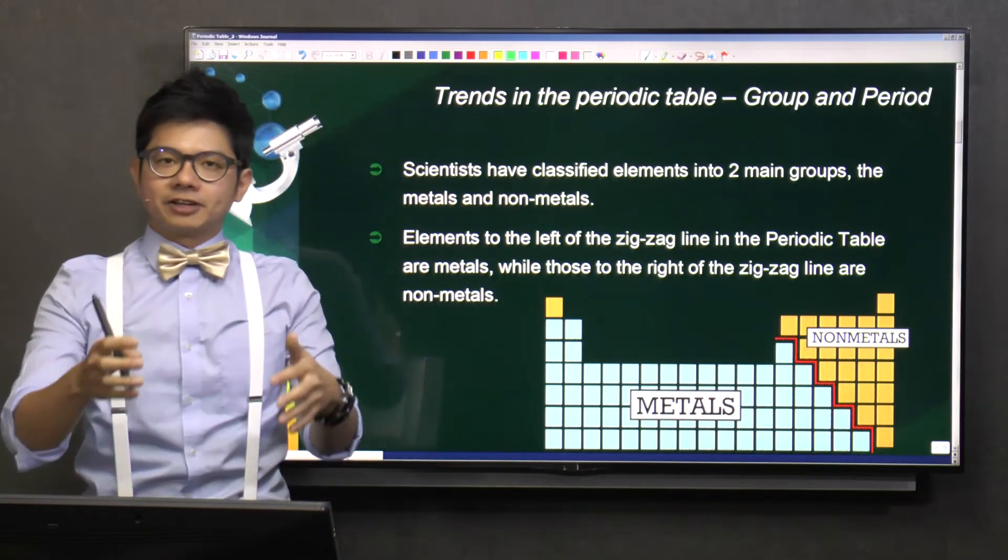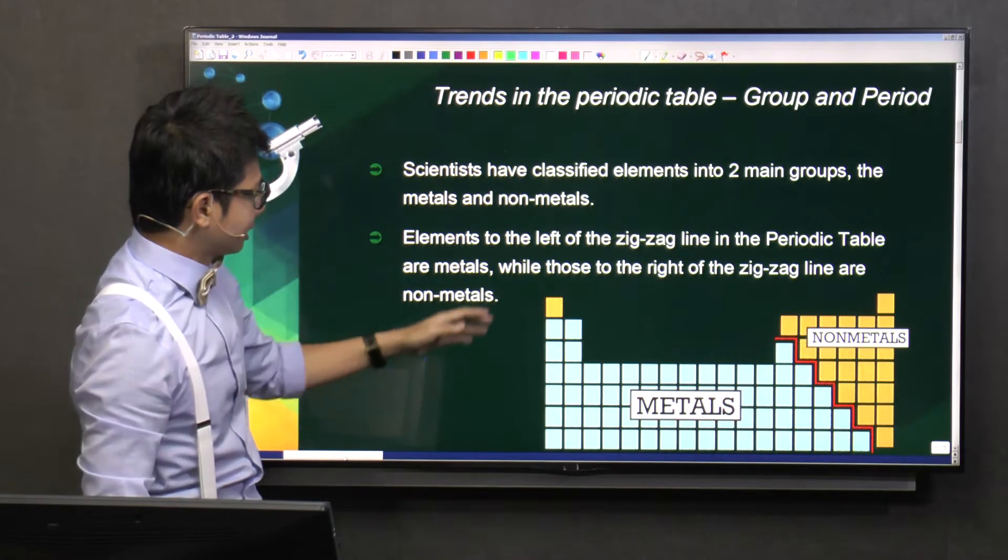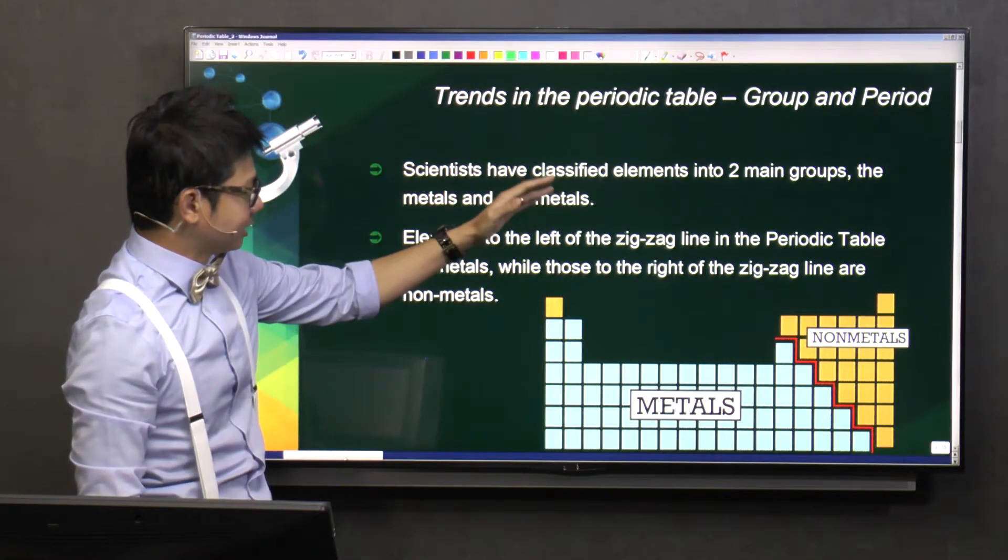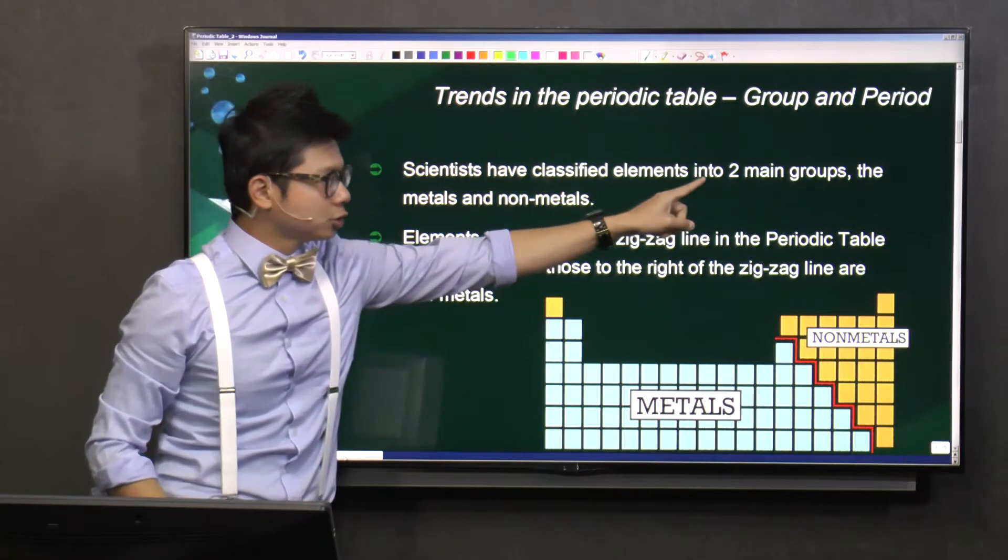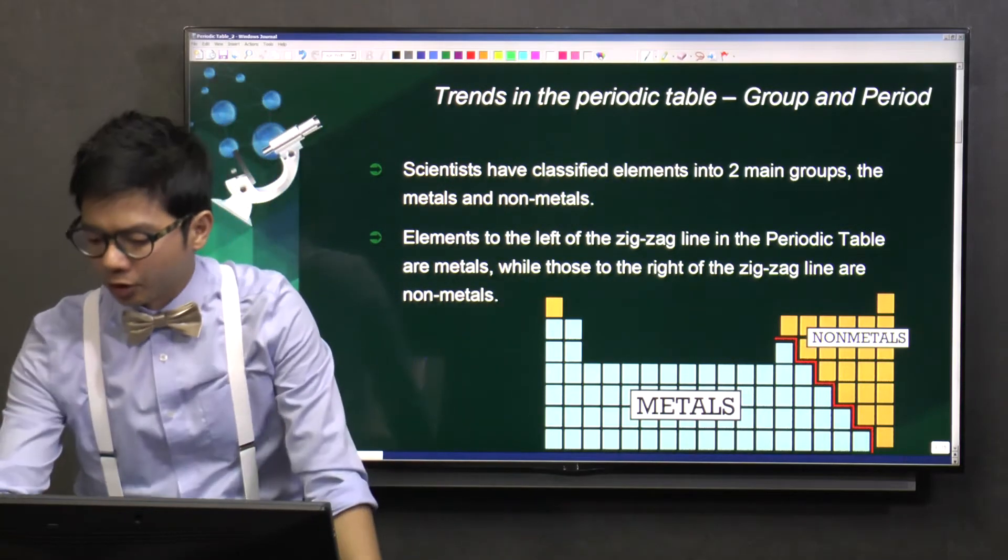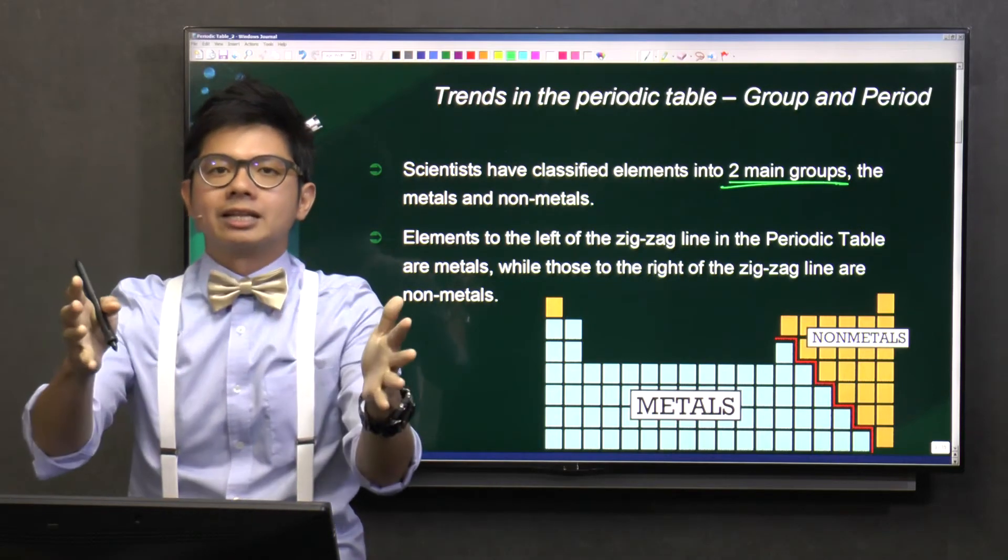So now, you see, classification of the periodic table. Basically, it will classify the elements under matters and non-matters. So these are the two main groups in a periodic table. And how do I split them into these two broad categories?